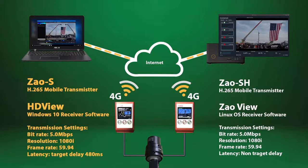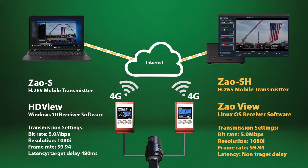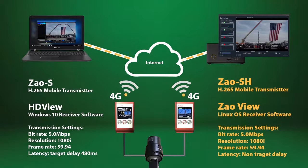The latency we set up with the target delay of 480ms. The Zao SH is the newest product, which delivers ultra-low latency, and its Linux OS receiver software is ZaoView.